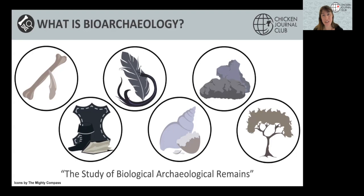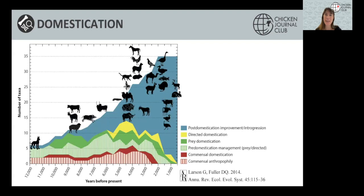This crash course is primarily geared towards the chicken journal club, so I'm going to focus on material that allows us to explore different themes surrounding human-animal relationships through time. One of those themes is domestication. Domestication represents a big event in human history, and the questions we tend to ask are: where, when, and how an animal was domesticated, how many times it was domesticated, and from what wild populations it descended.